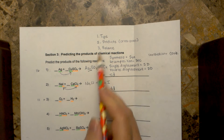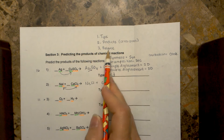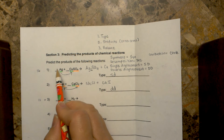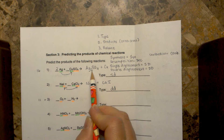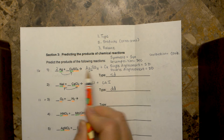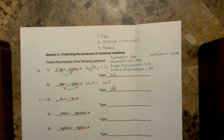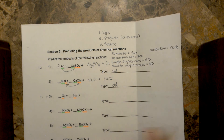Now that I've predicted my products using my crisscross, I can balance. I need two silvers on this side to equal the silvers on this side. I have one sulfate — one sulfate — one copper, one copper. Done.